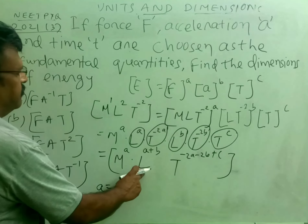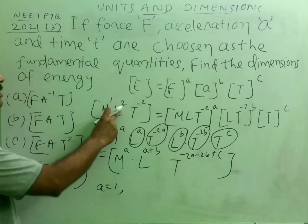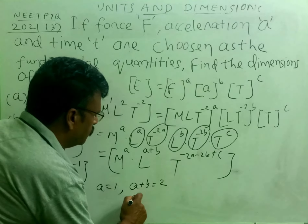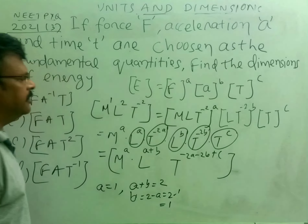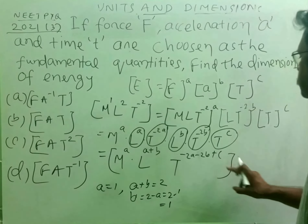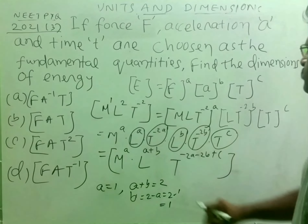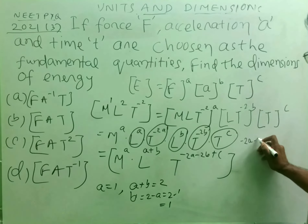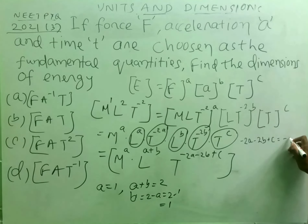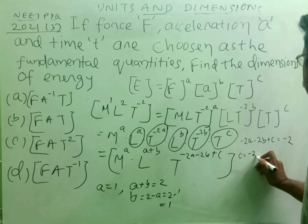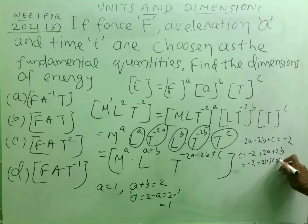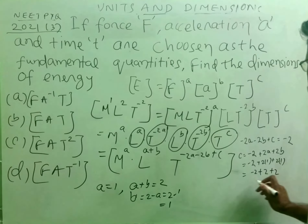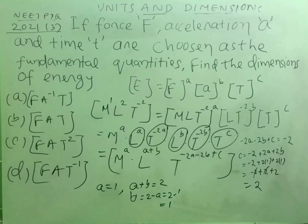The exponent of L on the left is 2, and on the right it is (a plus b), so a plus b equals 2, giving b equal to 2 minus 1, which is 1. For c, the exponent of T on the left is minus 2, so minus 2a minus 2b plus c equals minus 2. Solving: c equals minus 2 plus 2a plus 2b, which gives minus 2 plus 2 plus 2, so c is equal to 2.